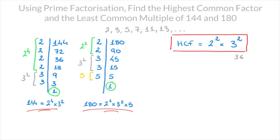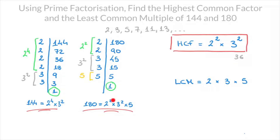Now that we have the highest common factor, let's find the least common multiple, or LCM. Our starting point for the LCM is to look for all of the distinct prime factors in our prime factorizations. Both 144 and 180 have 2 and 3, but 180 also has a 5. So the distinct prime factors are 2, 3, and 5, and all of these will be multiplied. We now look for the highest or largest power of each prime factor. For the factor of 2: 144 has 2 to the power of 4, and 180 has 2 to the power of 2, so the highest power is 2 to the power of 4.